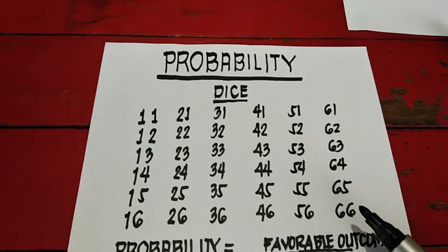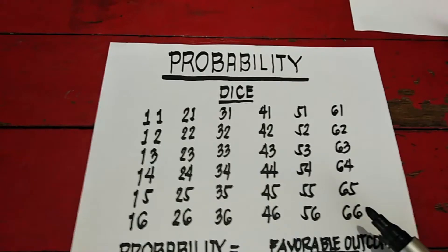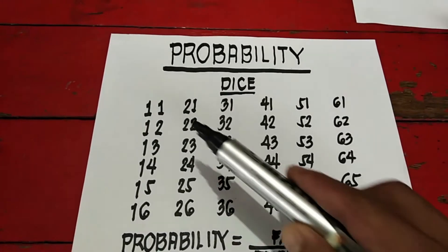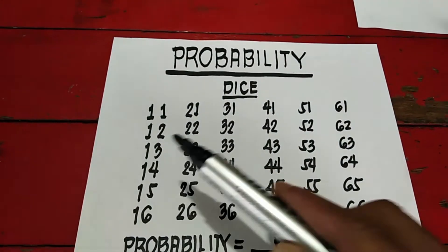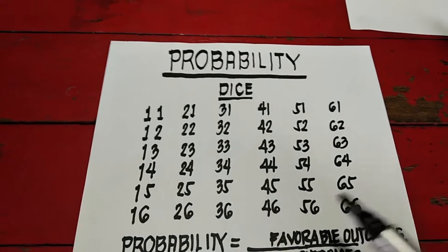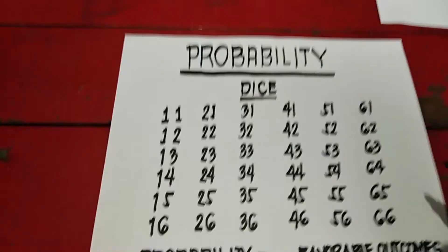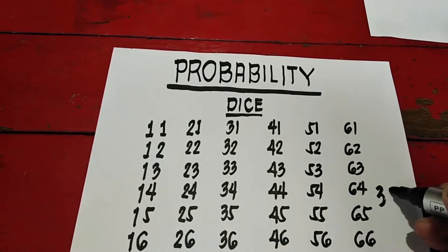It's possible na lalabas pag tinose mo yung dice. Kailan lahat yung total? 6. 1, 2, 3, 4, 5, 6. So 6 times 6. Ang total nila ay 36.